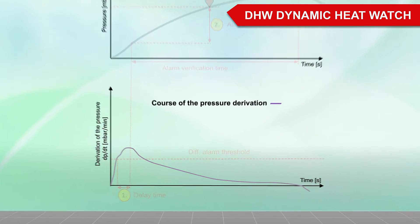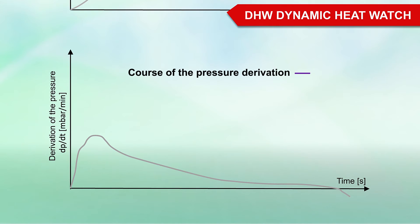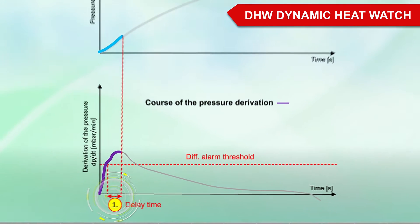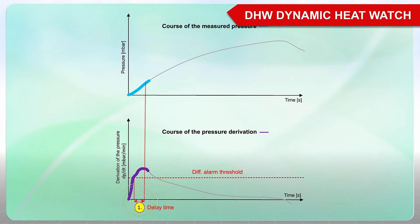First, the pressure gradient is considered. If the rate of rise of the pressure exceeds the configured limit DIFF ALARM THRESHOLD, the delay time is started. If this limit value remains exceeded during the defined time, the alarm verification algorithm is started.